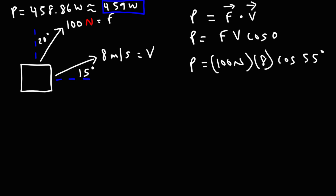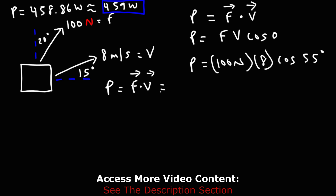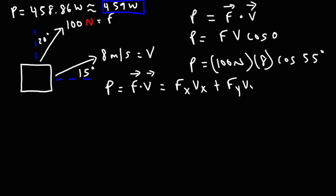Now let's get the same answer using another way. The instantaneous power is the dot product of the force and velocity vectors. Another way to calculate the dot product of two vectors is to multiply their x components together and multiply their y components together. Fx times vx gives us the instantaneous power delivered to the block in the x direction, and Fy times vy gives us the power in the y direction. Since these are scalars, we can simply add them to get the total power.